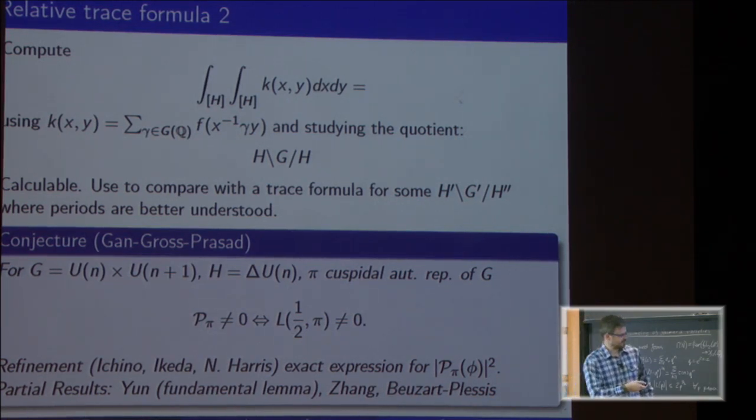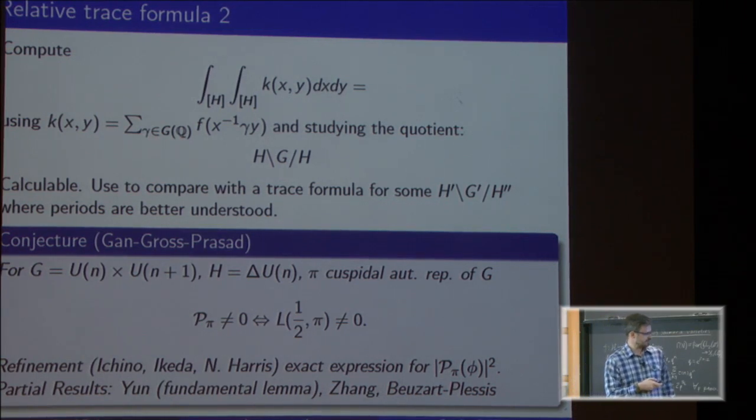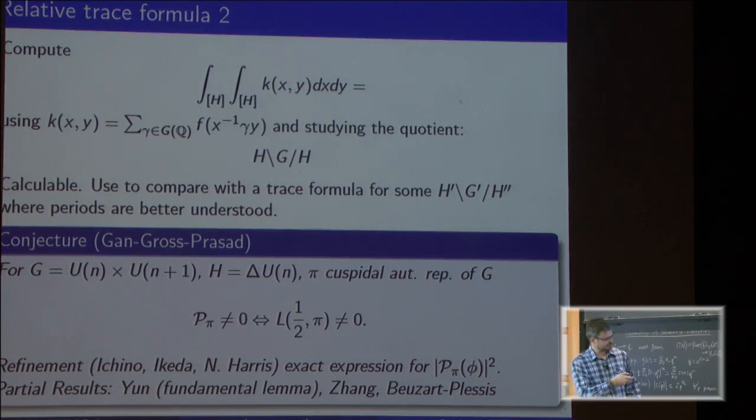Now we can formulate this conjecture. It sort of resembles what Chung Pang Mok was talking in the morning, in the way that there should be multiplicity one in the Vogan L-packet. If we look at the condition that the L function doesn't vanish, maybe we need to go over some different π, but it lies in the same packet. There are also being formulated conjectures that give precise expressions for the period, like in the case of Waldspurger's formula.